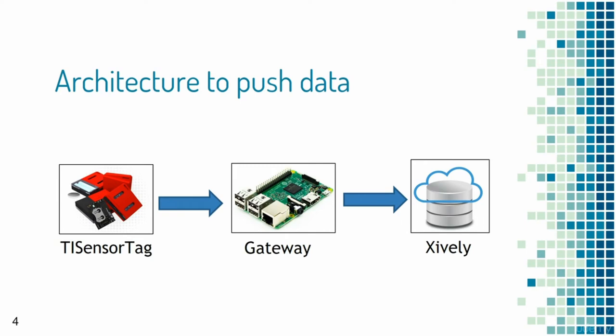The architecture for pushing data to the Xifli cloud platform starts with getting data from a sensor. In this case, a Texas Instruments (TI) sensor tag is used — an embedded device communicating over Bluetooth Low Energy (BLE) with multiple sensors including pressure, temperature, optical, and humidity sensors. Data is sent from the TI sensor tag to a gateway device over BLE, which then pushes the data to the Xifli cloud platform over the Internet using the HTTP REST API.